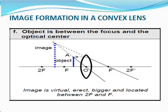When an object is between the focus and optical center, the image is virtual, erect, bigger, and located between 2F and F.